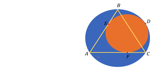Here we have an equilateral triangle ABC and two circles that are tangent to each other. The point of tangency is point D. The large circle is a circumscribed circle around triangle ABC. The small circle is tangent to side AB and side AC, with points of tangency at point E and point F. We are asked to find the ratio of the blue area to the orange area.